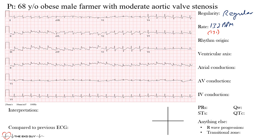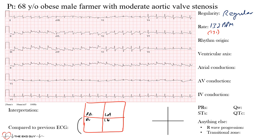Next we look at the rhythm origin. I use a diagram of the right atrium, left atrium, right ventricle, and left ventricle. I ask myself: is this rhythm originating from the ventricles, from the AV junction, or from the atria? I start from the bottom and ask are there any wide QRS complexes — meaning a duration of at least 120 milliseconds or longer?